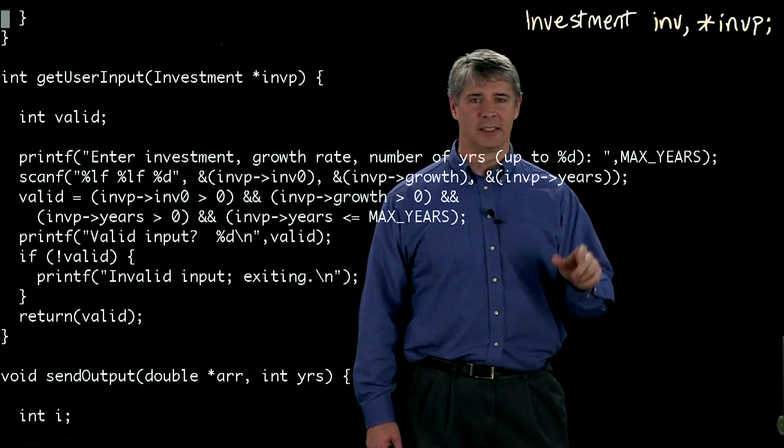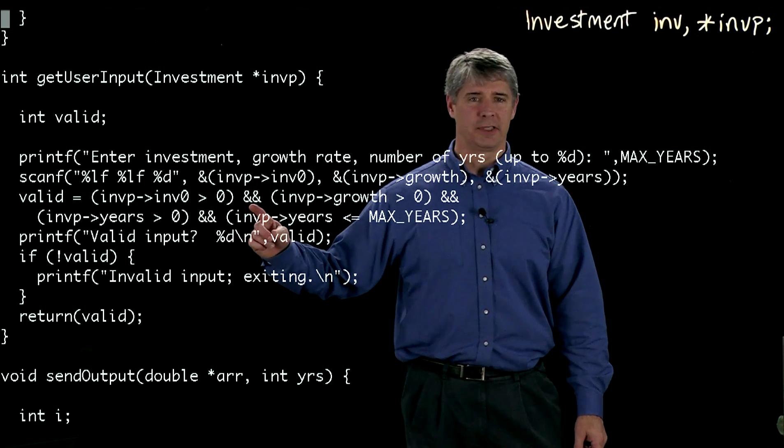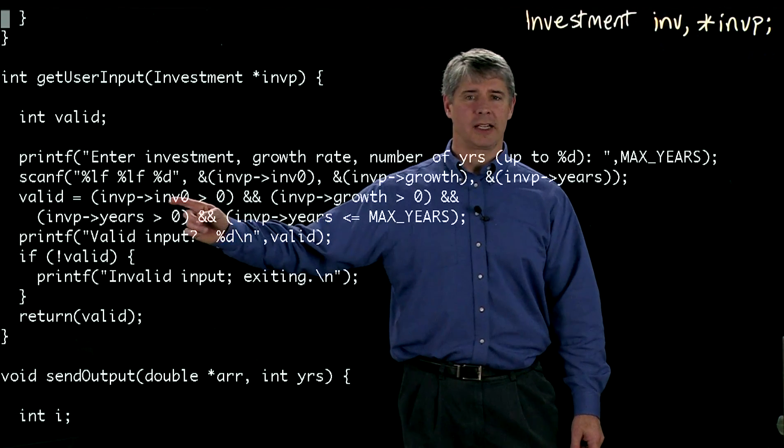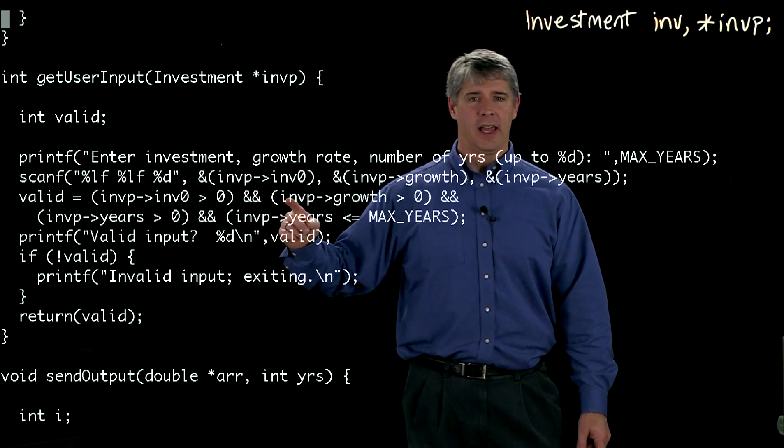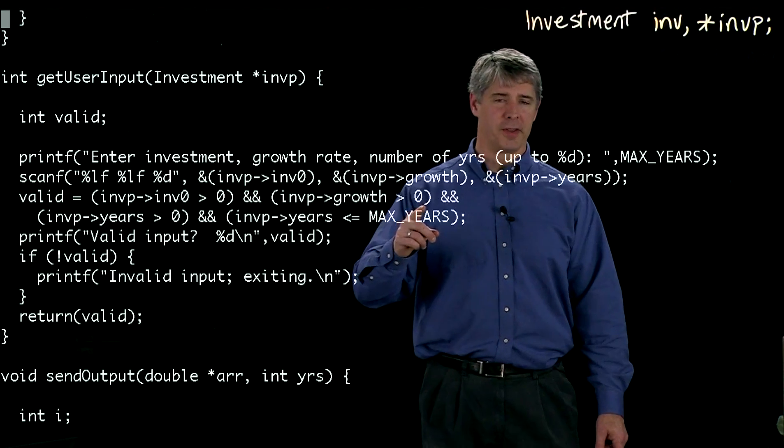So when we say and, a logical and, a Boolean and, we have to use two ampersand signs. So we're checking to see if this value is greater than zero and whether the growth is greater than zero.